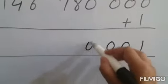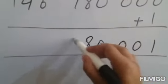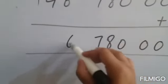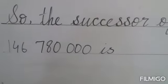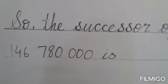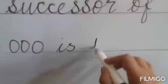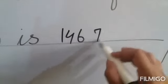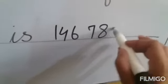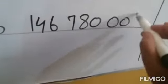When we add 1 to 0, we get 1, and all other numbers become the same because there is no number under them. So the successor of 146,780,000 is 146,780,001.